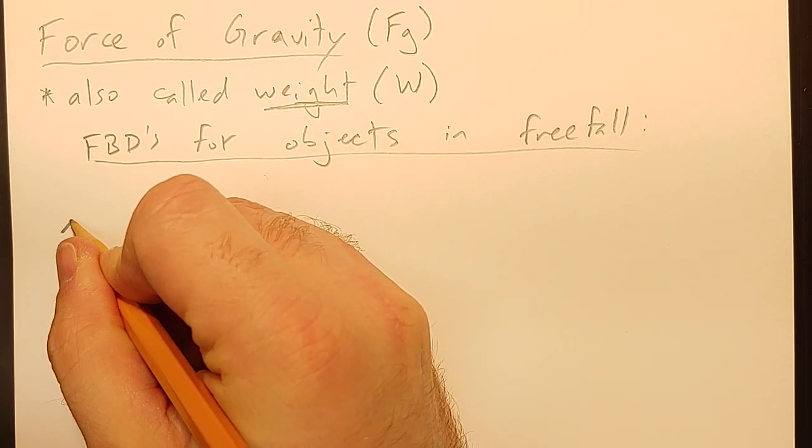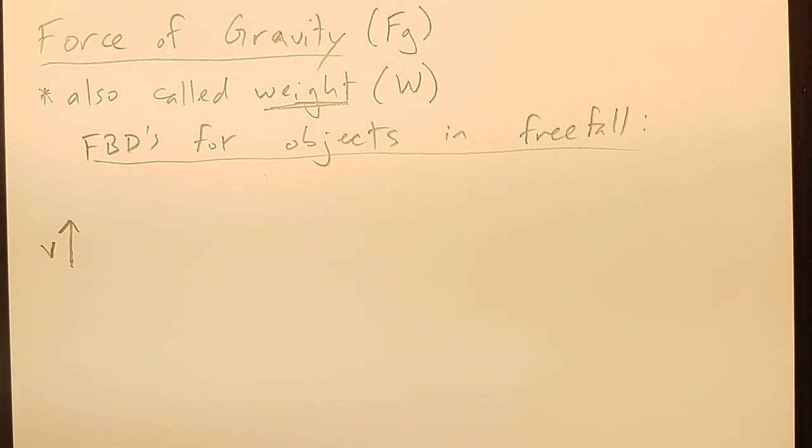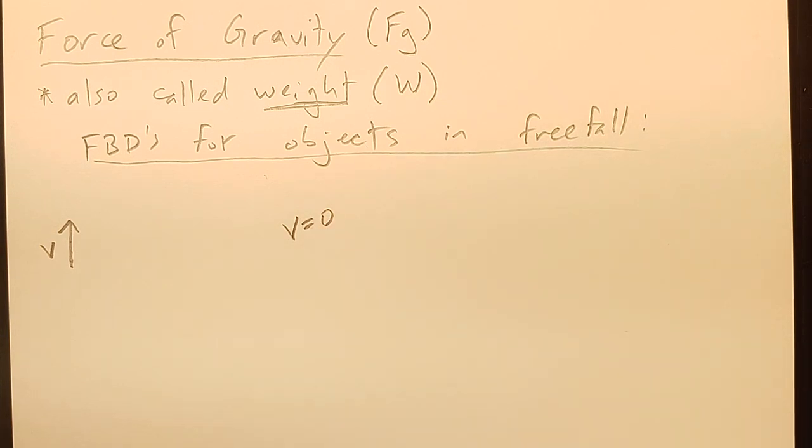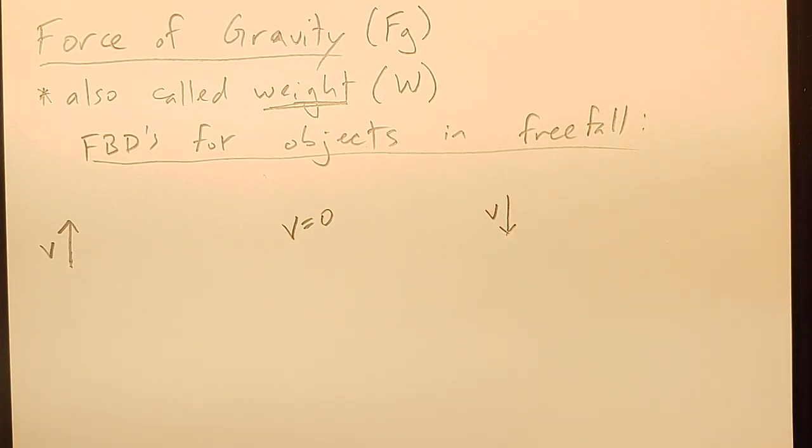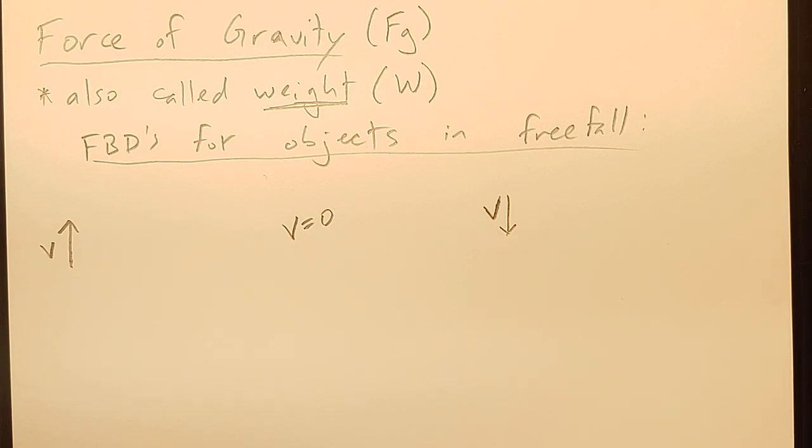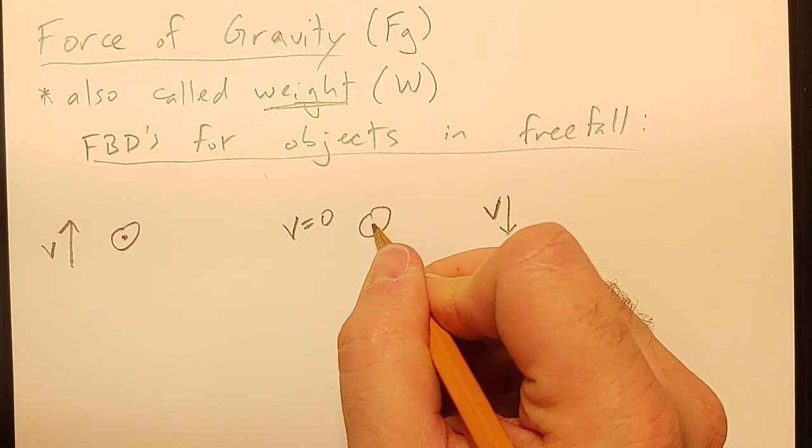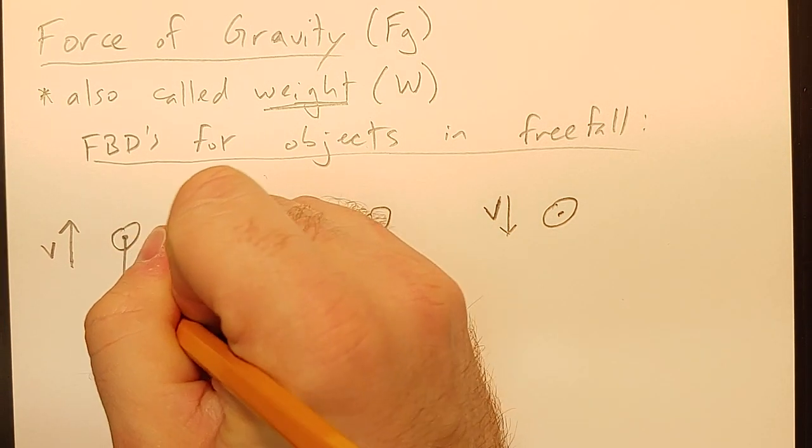And so we could have an object that is moving upwards. We said that counts as being in free fall. We could have an object that is at rest, that I'm about to drop, and the moment I drop it, it's in free fall. And we could have something that is already falling, and that counts as free fall. All of those were something we talked about were counted as free fall when we were doing our first unit on motion. And in all of those cases, so we've got our object, I've got my dot in the middle. If it's truly in free fall, the only thing acting on it is going to be the force of gravity.